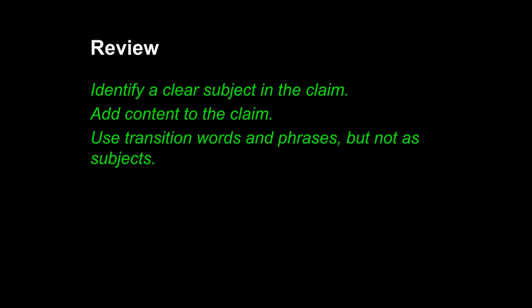Let's review the principles of composition. First, identify a clear subject in the claim — do not use a word like 'one,' 'another,' or 'their.' Second, add content to the claim; do not forget to add an answer as step two. This answer can be subtle — a single word is sometimes all that's necessary to indicate what will follow in the paragraph. Third, use transition words and phrases, but not as subjects. Phrases like 'also,' 'on the other hand,' 'for example,' 'first,' and 'finally' are simple and easy transition language — separate them with a comma and you're good to go.